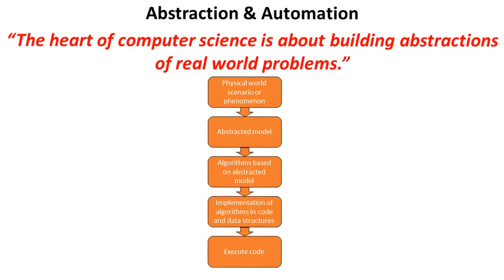In the real world, we have scenarios that have an almost infinite number of variables feeding into them. When we design a problem to model that, what details are important for us to get an accurate representation and understanding of this problem? Which variables are not important?